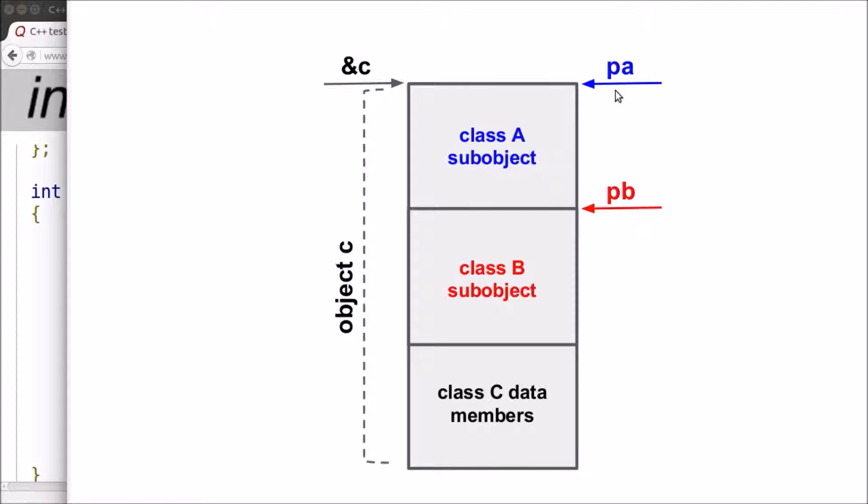This means that the pointer of base class A will contain the same address as the address of object C, and the pointer of base class B will contain an address which is not equal to the address of object C.